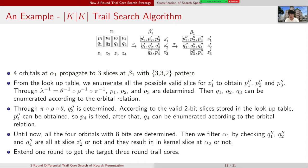Use a concrete example to illustrate how K|K trail search algorithm works. Assume four orbitals at state α1 propagate to three slices at state β1 with 3-3-2 pattern. The 3-3-2 pattern here indicates the number of active bits in each slice. From the lookup table, we enumerate all the possible valid slices for Z1′ to obtain P1′, P2′ and P3′.